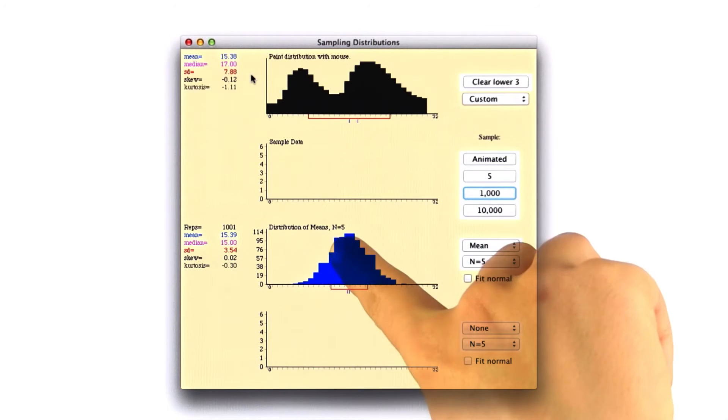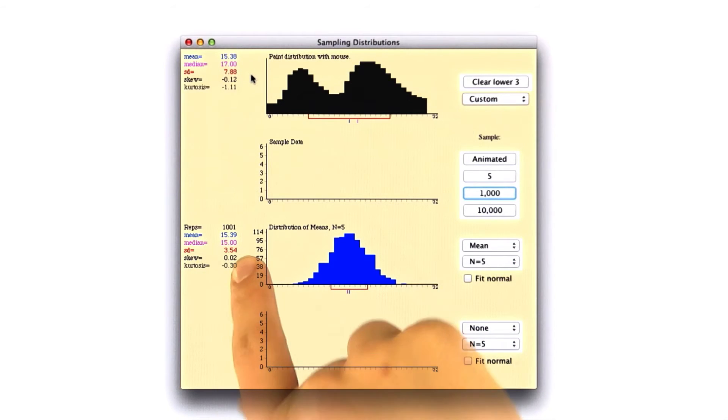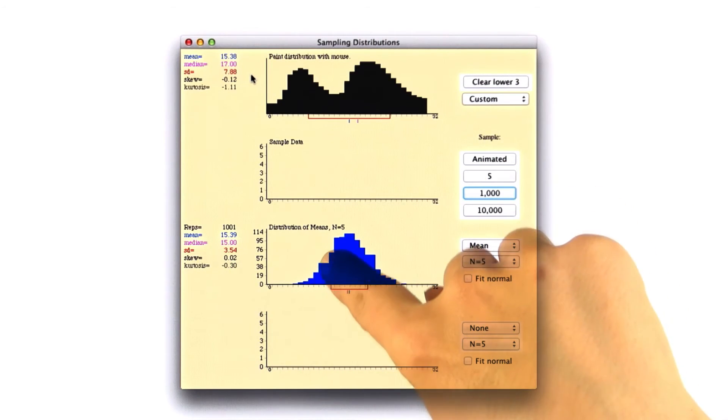And that might be because this standard deviation is treating this as a sample, so it's using Bessel's correction. That means that this standard deviation would be slightly bigger than if we were calculating it treating this as a population. But that's besides the point.